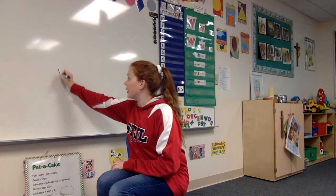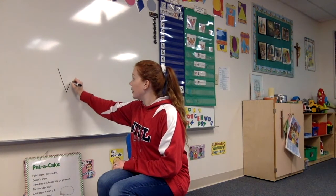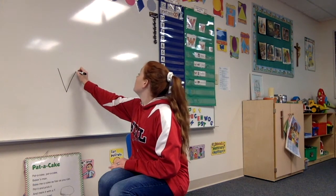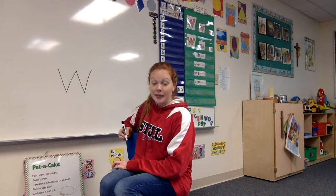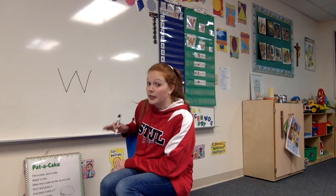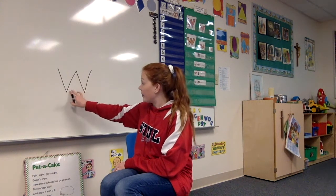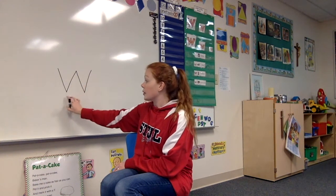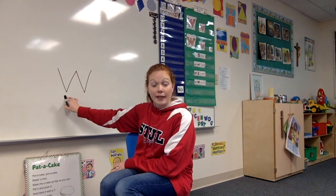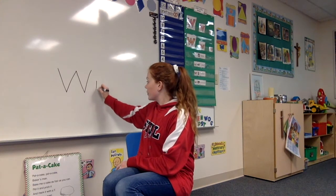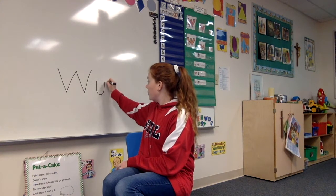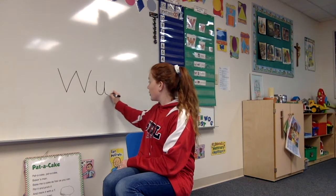A capital W is going to look like this. We're going to do a big line down, big line up, big line down, big line up. Then a lowercase w is a little different because it's not going to have these diagonal lines with a point — it's going to have some curved lines. So it looks like this: curve down, curve up, curve down, curve up.